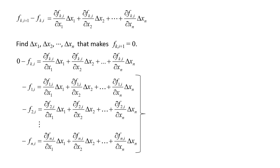Since the partial derivatives are also evaluated at the current step i, we can calculate those quantities as well. This means the partial derivatives are simply coefficients to the unknown delta x terms. Notice that all the delta x terms are raised to the first power — there are no nonlinear terms.